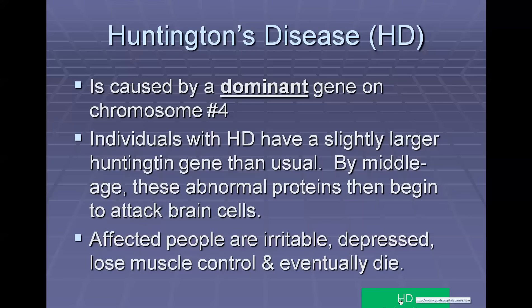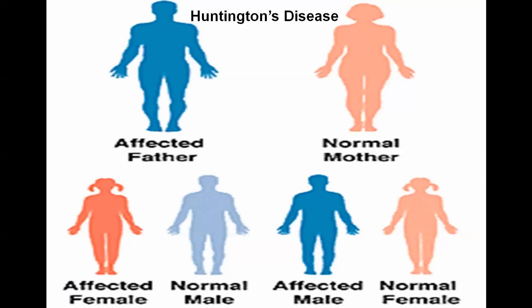Here's how the Huntington's trait is passed on. If you've got an affected father who is heterozygous, he's going to be able to pass it down to any of his children. In a pedigree for Huntington's, you're going to see that many more people are affected because it's dominant, so it's just going to be showing up much more often.